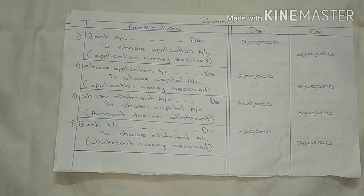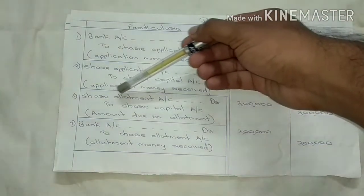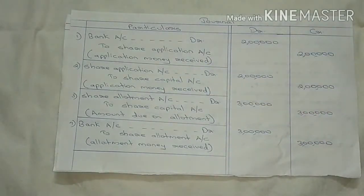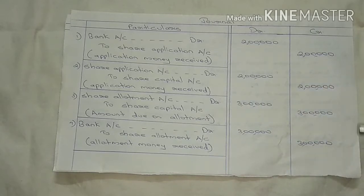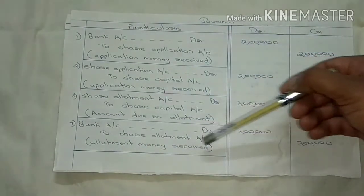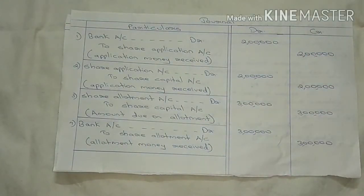The company collected the allotment money. Share Allotment Account debited to Share Capital Account — amount due on allotment: ₹3,00,000. Allotment due is ₹3,00,000 for 1,00,000 shares.